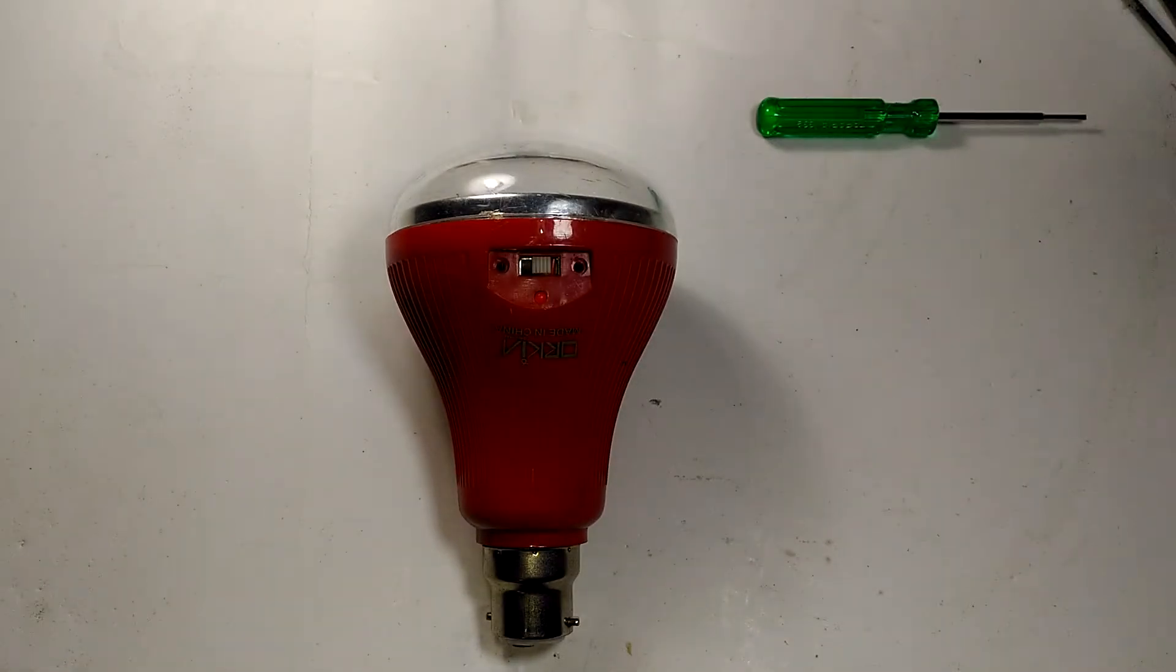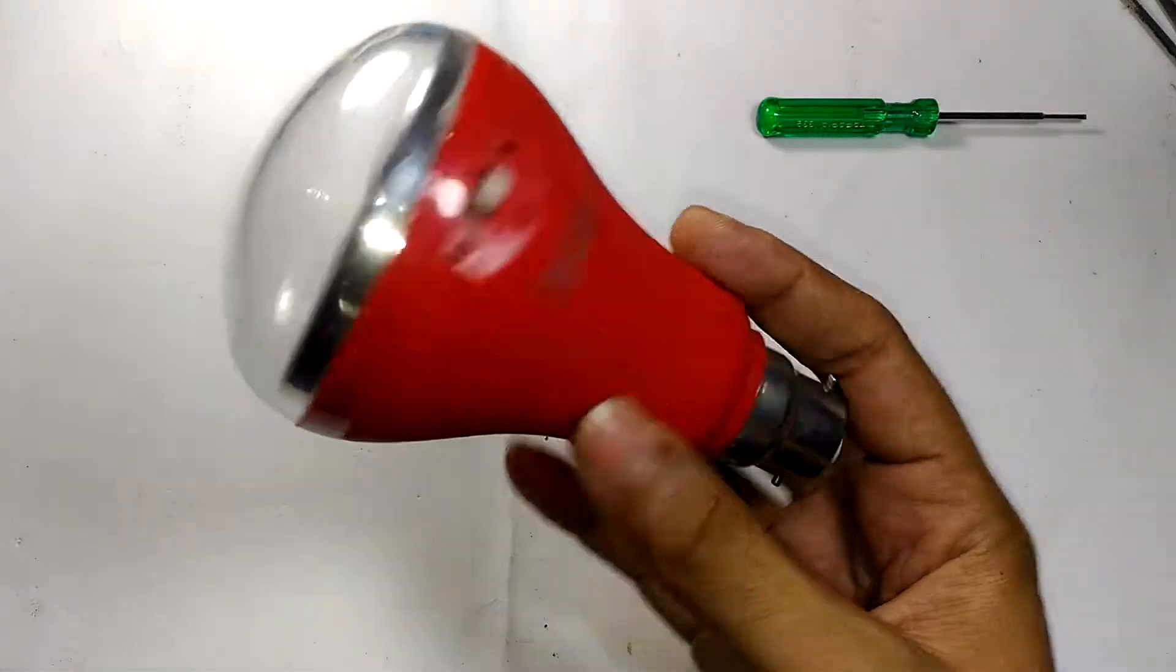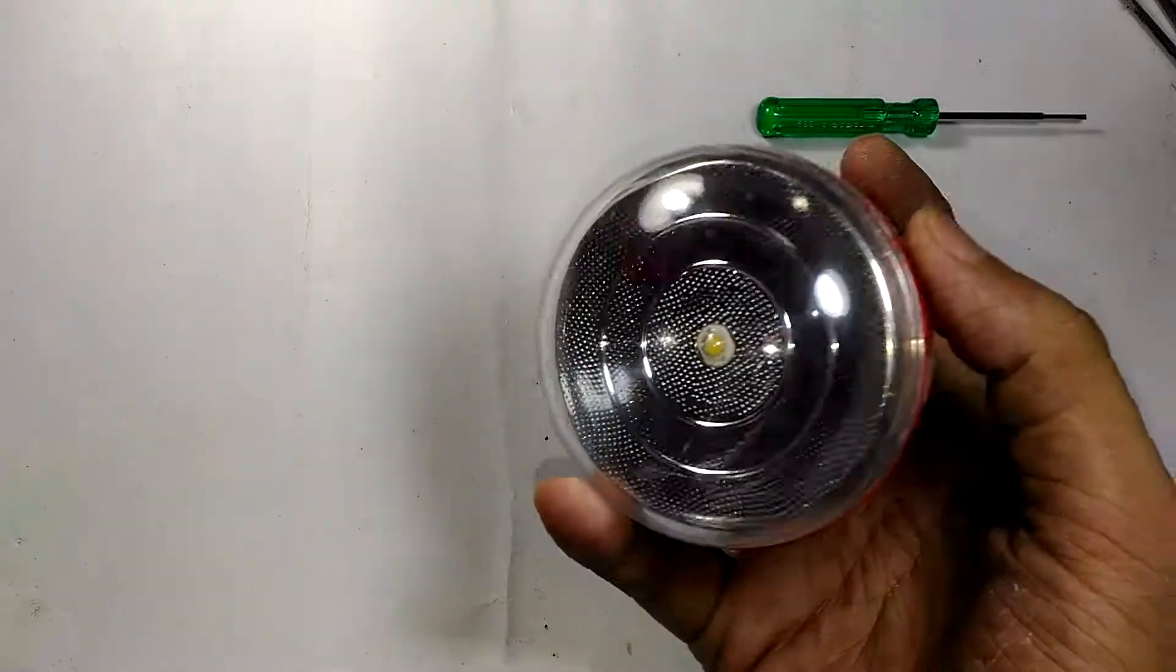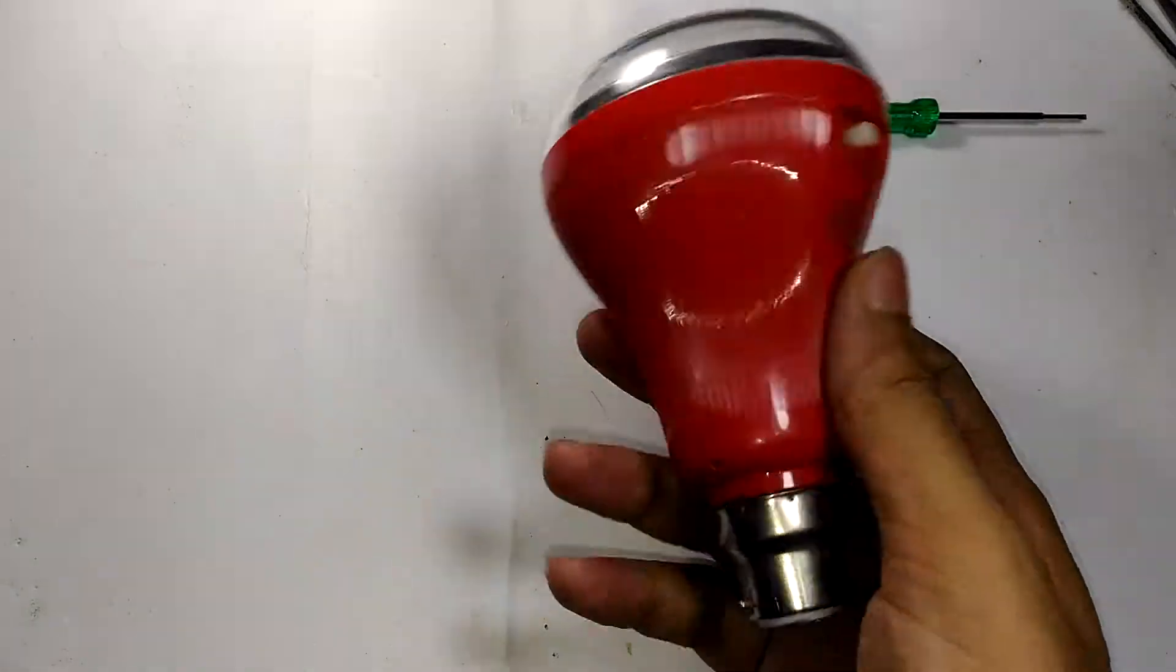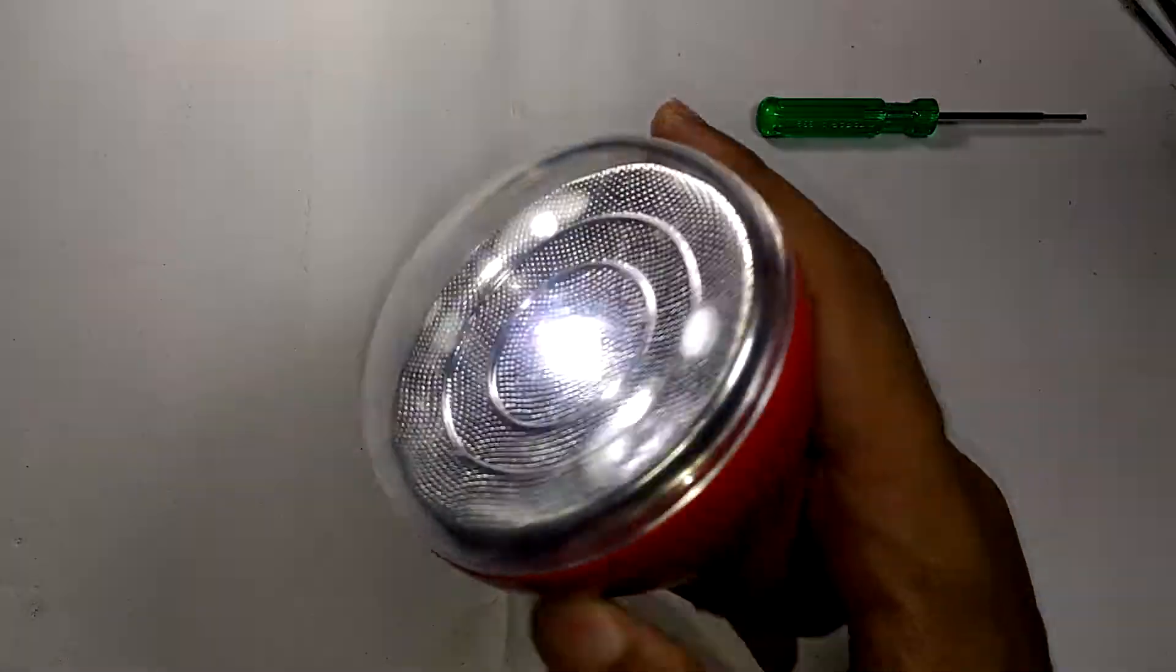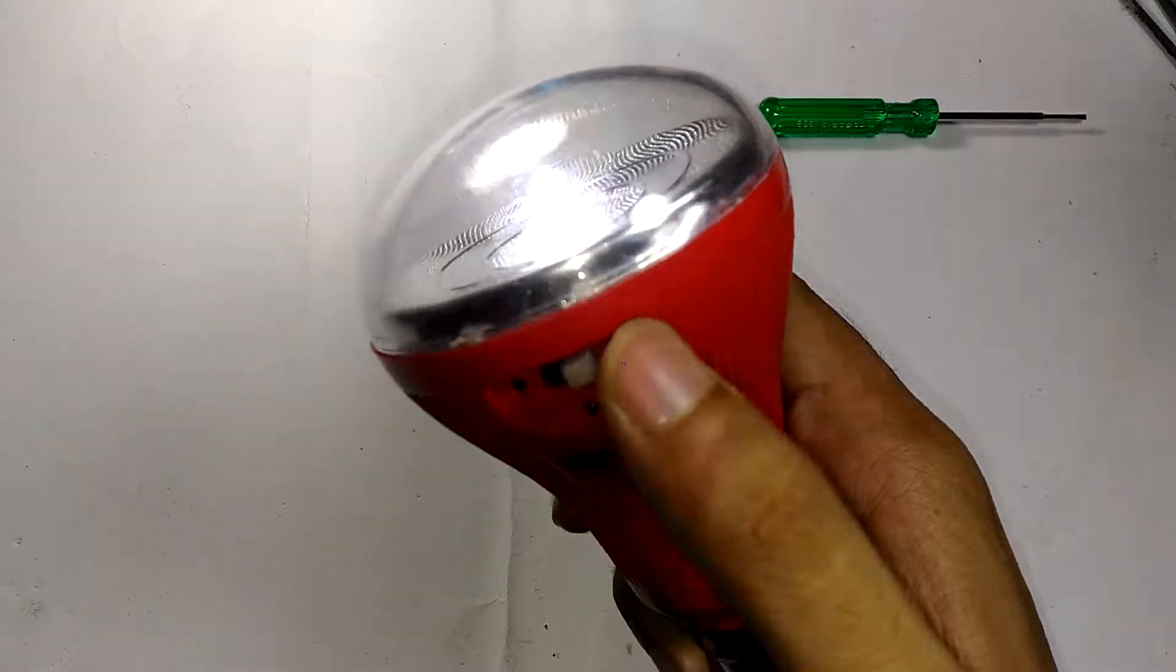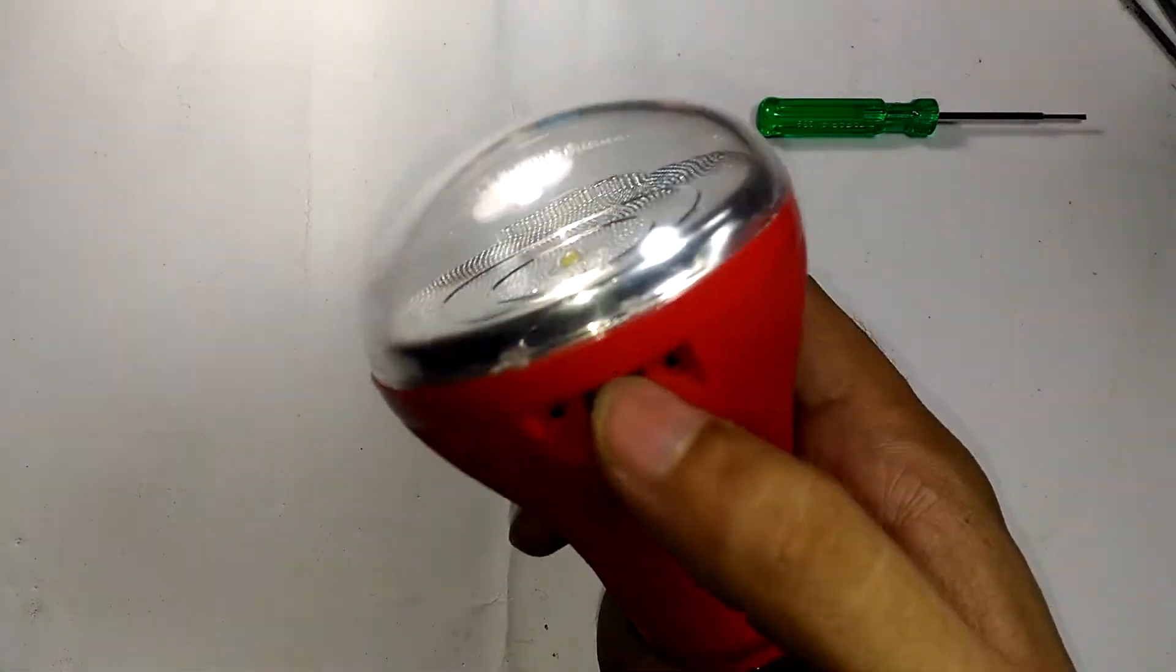Hello YouTube, welcome to Inside Electronics. In today's episode, we're going to take a look at this Chinese-made emergency light. It's kind of an emergency light and also a flashlight because it has a switch with three modes, and the center one is off.